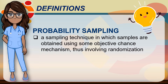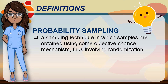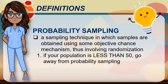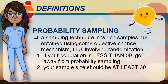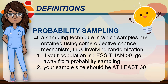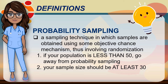Probability sampling refers to a sampling technique in which samples are obtained using some objective chance mechanism, thus involving randomization. Please take note that if your population is less than 50, move away from probability sampling, and your sample size should be at least 30. Probability sampling techniques give all elements of the population an equal chance of being selected, but using this technique may consume a lot of time and effort. After having your target population and sample, it is time to decide how to select the sample of the study. There are different types of selecting samples under probability sampling.